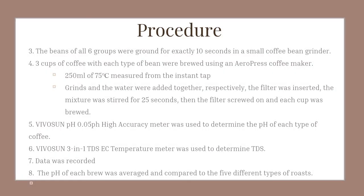The coffee beans of all six groups were ground for exactly 10 seconds. To brew the coffee, I added 250 milliliters of 75 degrees Celsius water with the ground beans, inserted a filter, stirred the mixture for 25 seconds, screwed on the lid, and brewed each cup. This process was repeated three times for each group, for a total of 18 times.